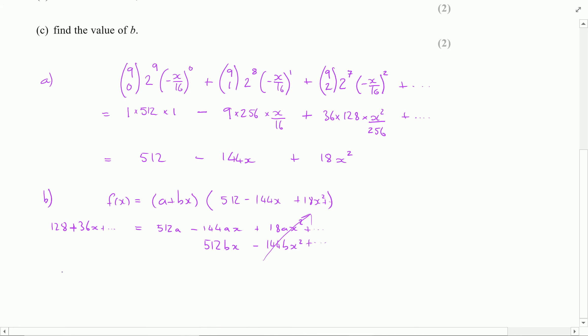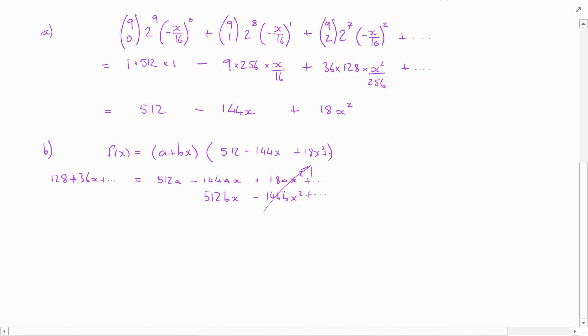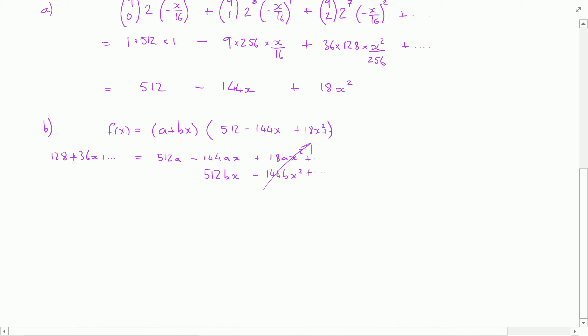And what I'm going to do is for part b, I believe we're trying to find out the value of a. So for part b I want to find 128 which I know is going to be the same as 512 times by a. So I can divide through by 512 and find out that that becomes a quarter is equal to the value of a.